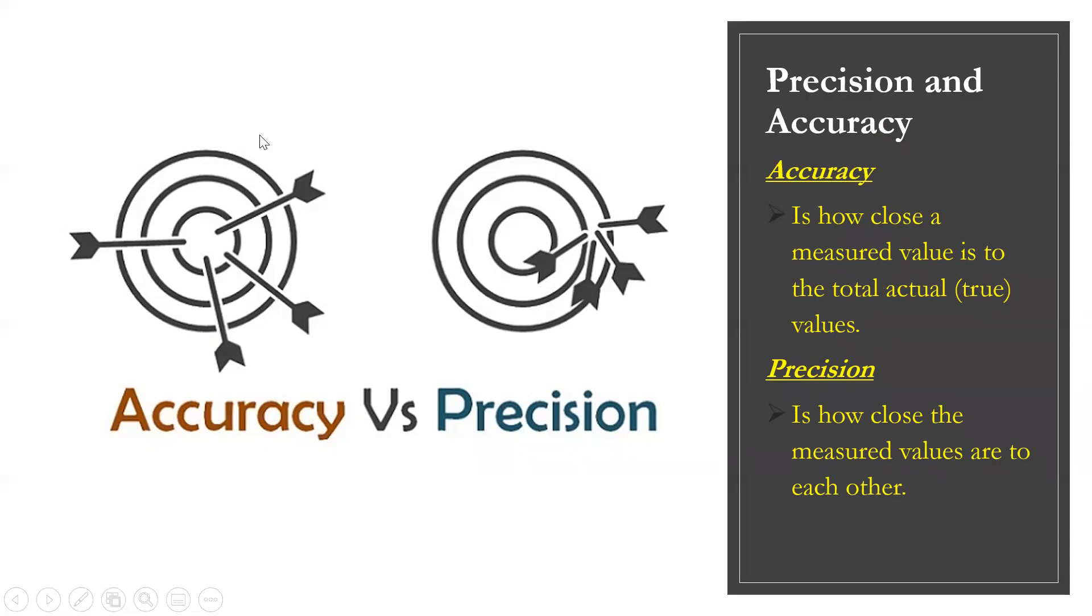it is how close the measured values are to each other. Look at this illustration. This shows accuracy: how close are these pins to the target? And this one is precision: how close are these pins to each other?